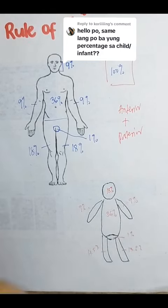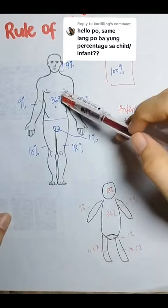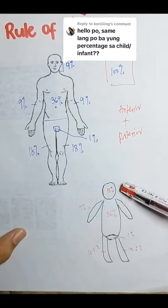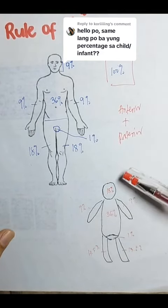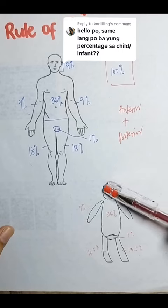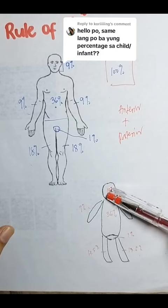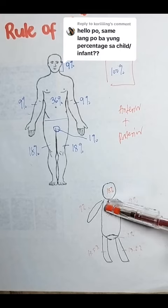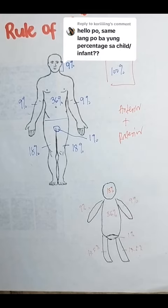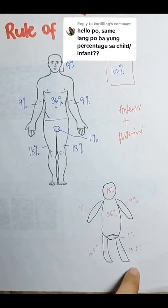Same sa ating adult. So, ito na lang ang i-memorize — i-divide mo lang siya by 2. Kung 18 ang buong head, so 9 yung anterior, 9 yung posterior. Ganon lang siya. 36, so 18, 18. Arms ay 9, so 4.5 — i-divide by 2 na lang din ito.